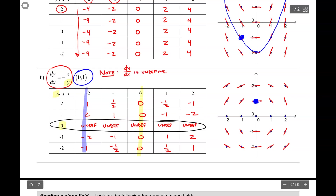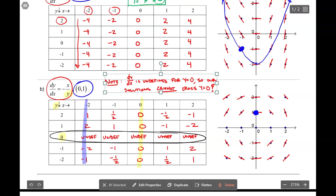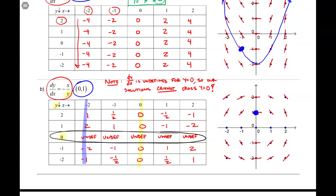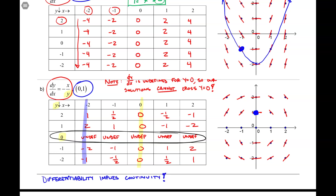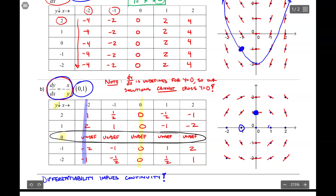Now I'm going to tell you why that circle is wrong. The dy/dx is undefined for y equals 0, so our solutions cannot cross y equals 0. Let me go back to an old idea to tell you why: differentiability implies continuity. Because our function is differentiable, our solution has to be continuous. Well, it's not differentiable at y equals 0 — therefore y equals 0 cannot be in our solution. So the correct approximate particular solution through (0, 1) looks like this. The moral of this story is: never cross an asymptote of the differential equation. In this case, that was y equals 0.